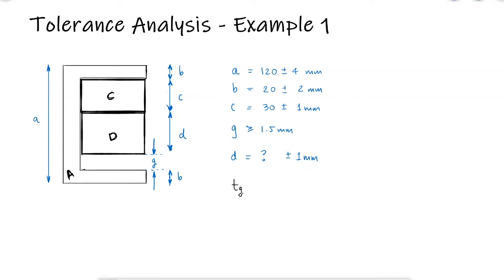During that video, we learned that the tolerance for interference or clearance dimensions can be calculated as the sum of the tolerances for the other dimensions.